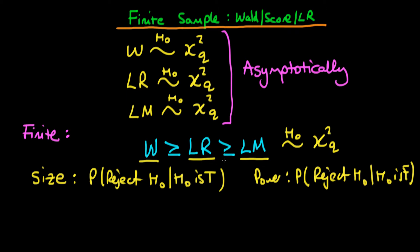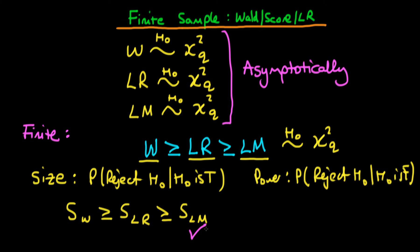If we compare the Wald, the likelihood ratio, and the LM statistic in terms of these two properties, we can see that the size of the Wald statistic is going to be greater than or equal to the size of the LR statistic, which in turn is going to be greater than or equal to the size of the LM statistic. Essentially, if the Wald statistic had a size of say 5%, we would reject the null hypothesis fewer times under the LM statistic because it is smaller in value — hence the size of the LM statistic is smallest. So in terms of this property, we would prefer to use the LM statistic.